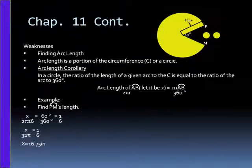Continuing with chapter 11, my weaknesses are finding arc lengths. Arc length is a portion of the circumference of a circle. The arc length corollary is, in a circle, the ratio of the length of a given arc to the circumference is equal to the ratio of the arc to 360. And there's the equation, the arc length of arc AB, which you can let be x, over 2πr equals the measurement of arc AB divided by 360 degrees.